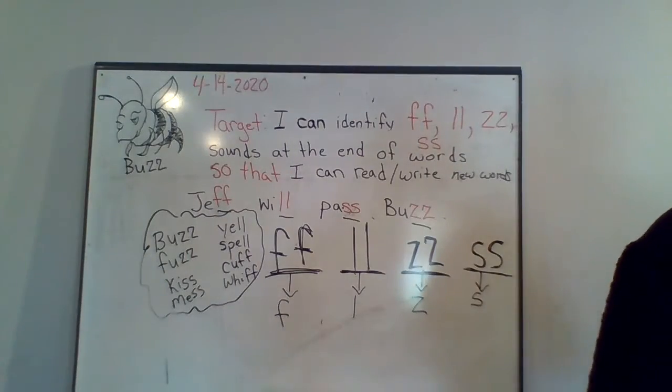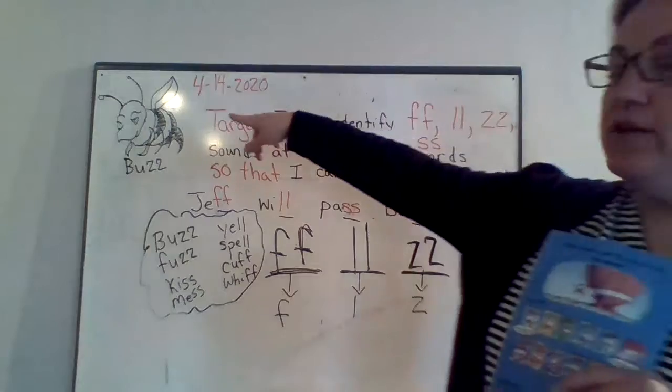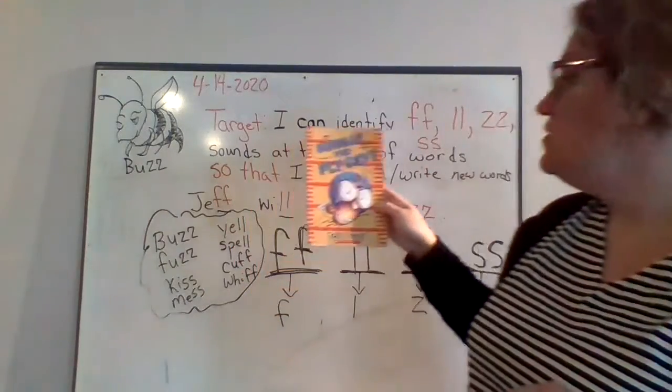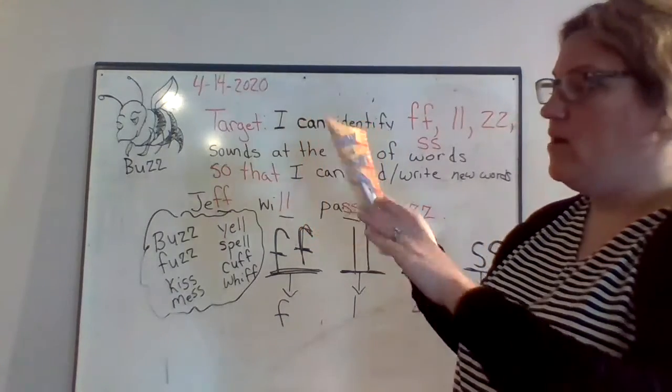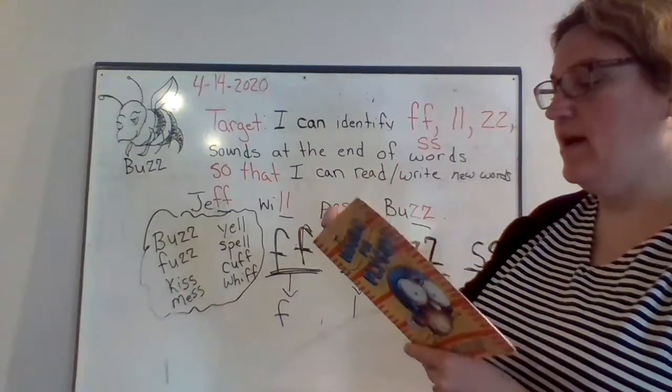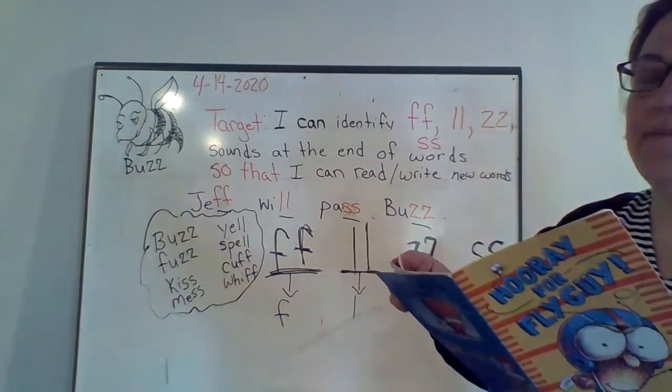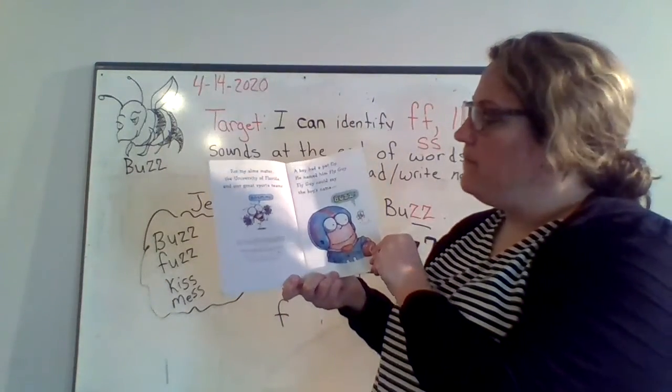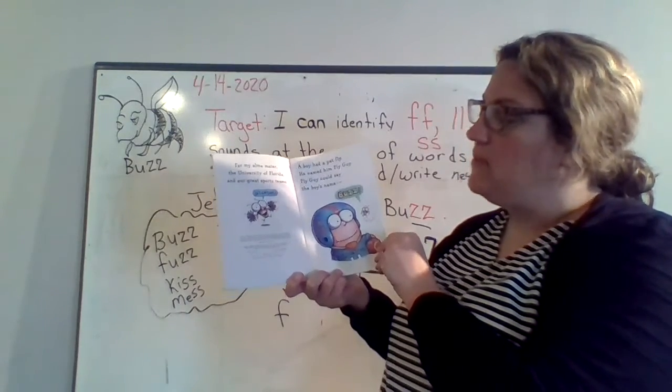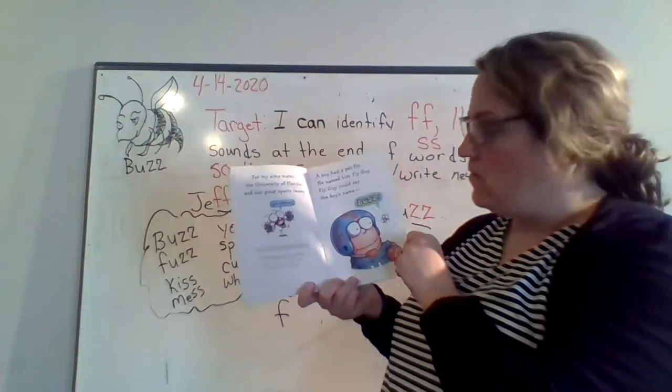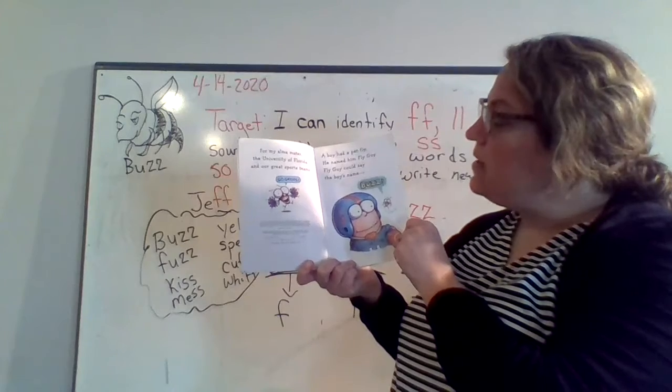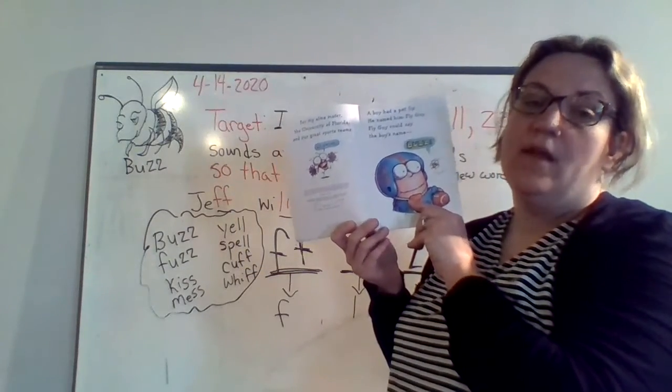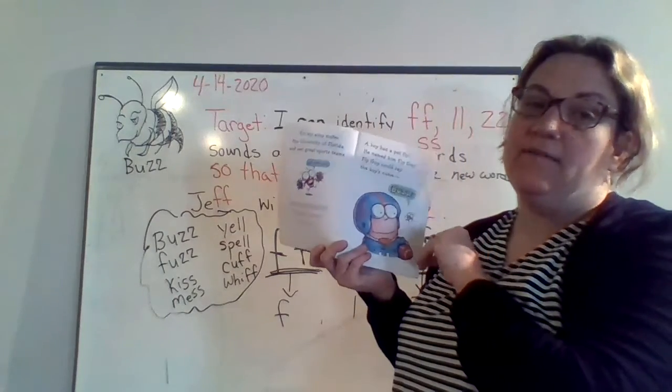Okay, before I leave today, I'm going to read you this story about our character Buzz here. I want to say thank you to Scholastic for letting me read this to you online. Do you know Fly Guy? This is Hooray for Fly Guy by Tedd Arnold. There's a little boy in here and he's got a pet, and the boy calls him Buzz. His pet is a fly and the boy calls him Buzz. A boy had a pet fly. He named him Fly Guy. Fly Guy could say the boy's name: Buzz. Buzz is the boy, Fly Guy is the fly.